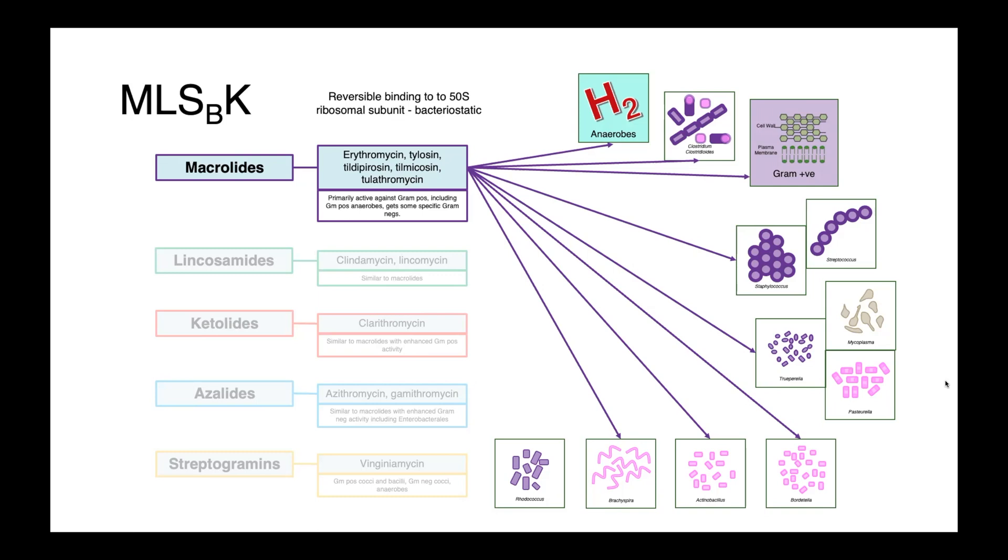Our macrolide drugs, erythromycin, tylosin, tildiperosin, tilmicosin, and tulathromycin, are primarily active against gram-positives, including gram-positive anaerobes, but they have some very specific anti-gram-negative activity as well.